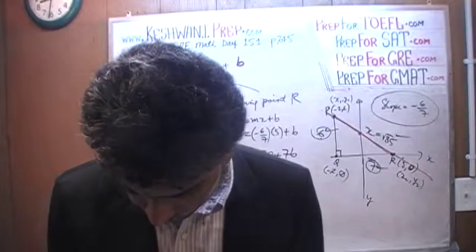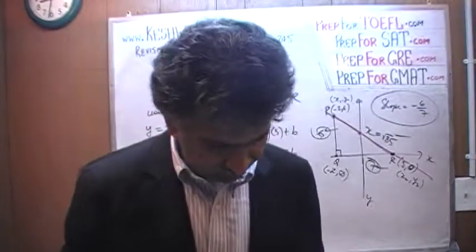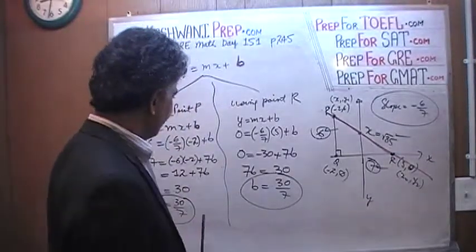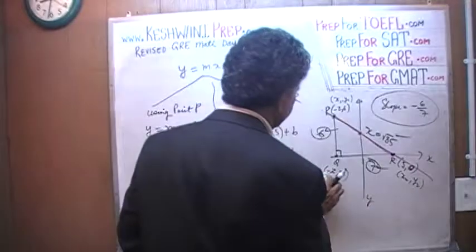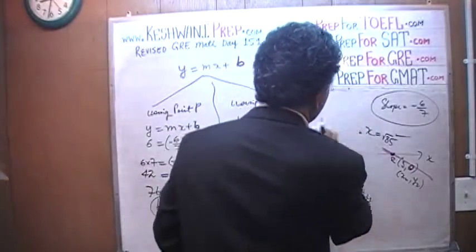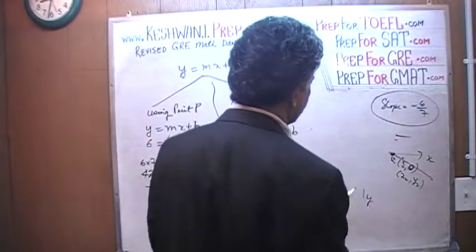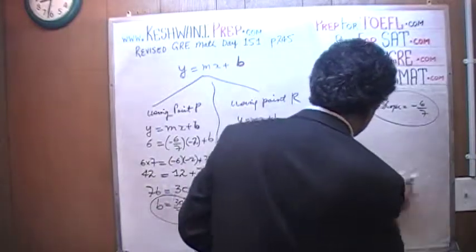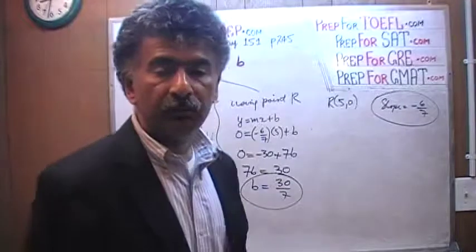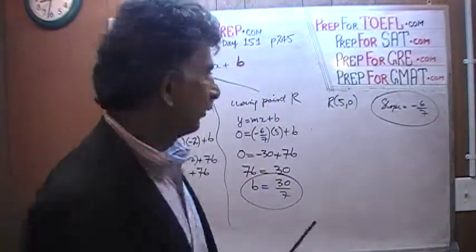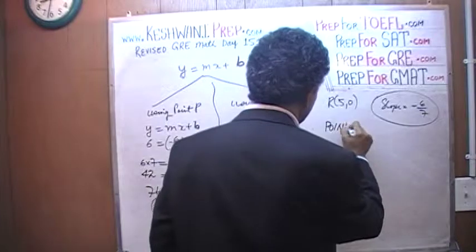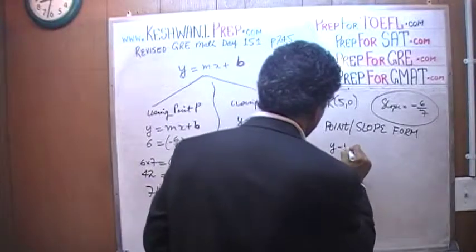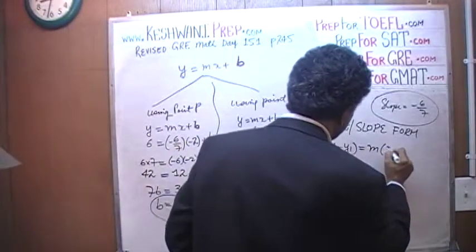Oh, we still have to find the equation of the blasted thing. All right. Let's do the equation over here. Remember, the slope is negative 6 over 7 and we're going to use point R, 5, 0. So here we have a point. We have a slope. So we're going to use point-slope form. Which goes like this: y minus y1 equals m times x minus x1. Again, one more time. These equations, you just have to know them. You just have to know them. There is no other alternative.